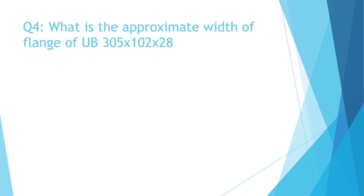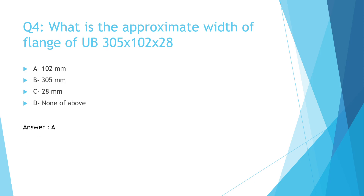Question Number 4: What is the approximate width of the flange of universal beam 305 x 102 x 28? A. 102mm, B. 305mm, C. 28mm, D. None of the above. The correct answer is A. 102mm.